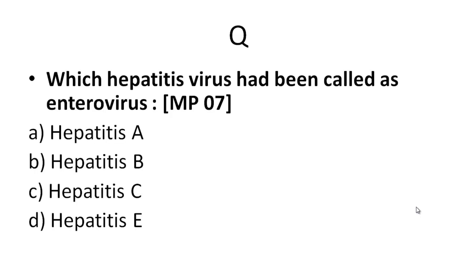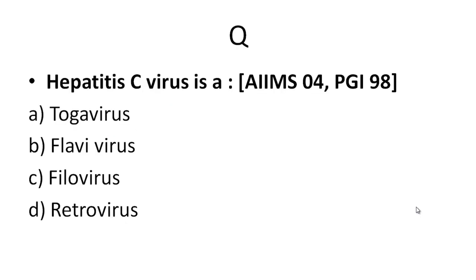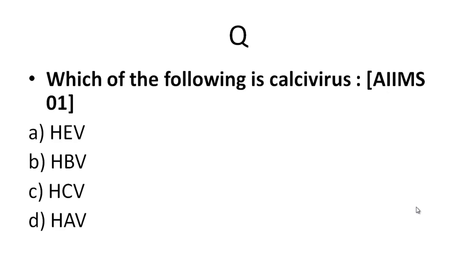Looking at this slide, let us review some questions asked in examinations. For example: which hepatitis virus has been called an enterovirus? The answer is hepatitis A — it was earlier called enterovirus 72 and is now known as hepatovirus. Next: hepatitis C virus — is it Toga, Flavivirus, or Retro? Hepatitis C virus belongs to the Flavivirus family. And which of the following is a calicivirus? HBV is Hepadnaviridae, HCV is Flavivirus, HAV is an enterovirus — so HEV, hepatitis E virus, is the calicivirus.